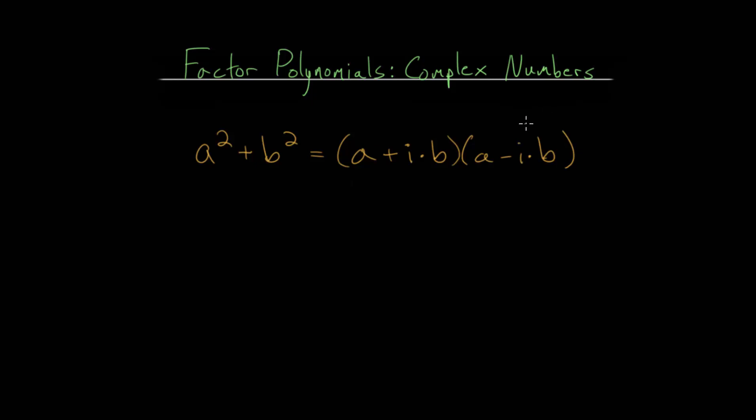In the previous video, we derived a formula when you have a sum of two squares, that this is equal to a plus i times b multiplied by a minus i times b, where i, we know, is the square root of minus 1.